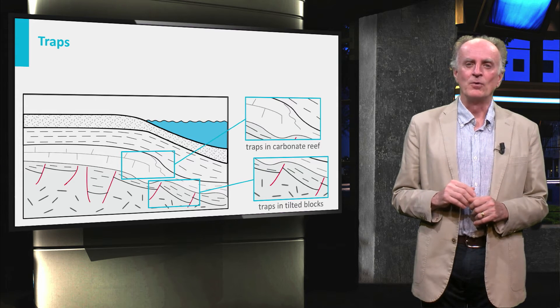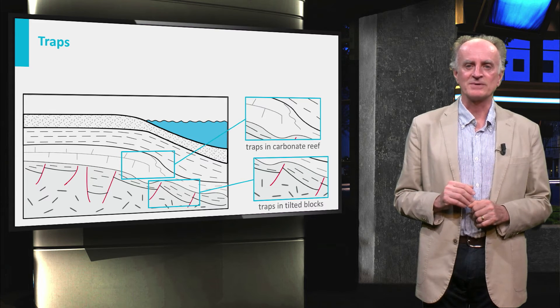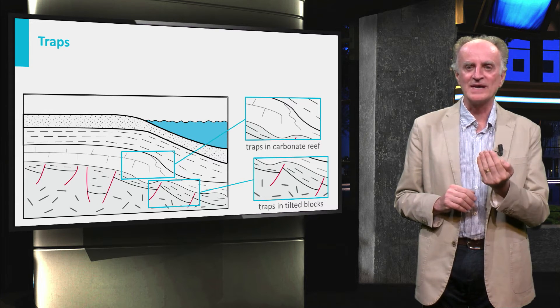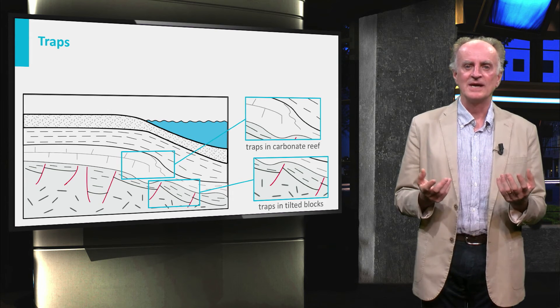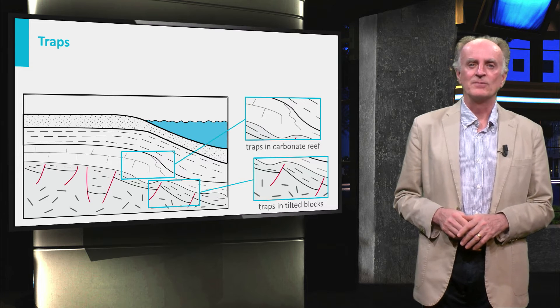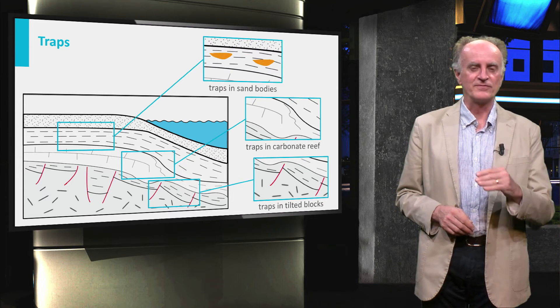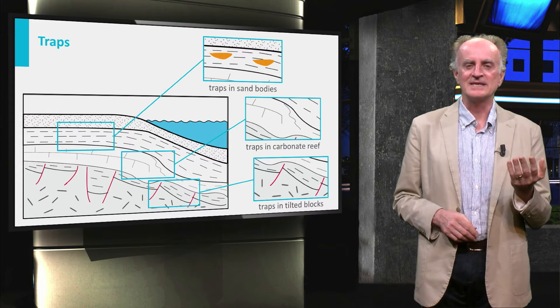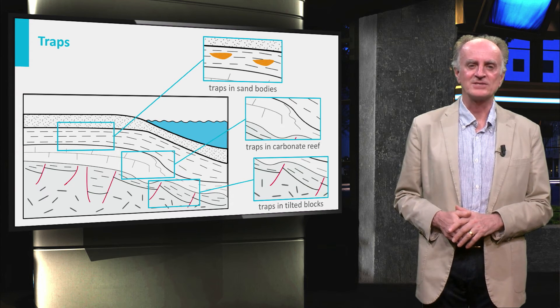Traps are often also found in carbonate succession deposited during the early post-rift. Hydrocarbons migrating mainly along the faults manage to enter the post-rift and can accumulate in porous facies associated, for instance, with carbonate reef build-ups. Hydrocarbons can also further migrate upward, entering sand bodies in the siliciclastic part of the succession often associated with turbidite and pelagic sedimentation.